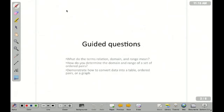Your questions: What do the terms relation, domain, and range mean? How do you determine the domain and range of a set of ordered pairs? And finally, demonstrate how to convert data into a table, ordered pairs, or a graph.